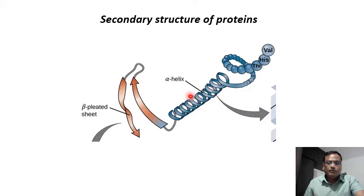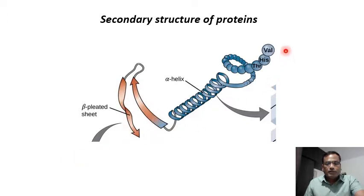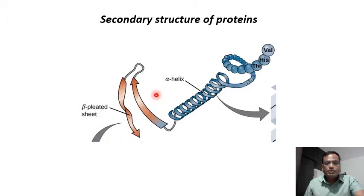This is the secondary structure. In some parts of the protein it produces a sheet-like structure, which is commonly called the beta pleated sheet. Throughout the length of the protein molecule we come across many such alpha helix and beta pleated sheets.